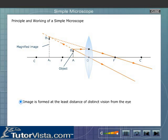Image is formed at the least distance of distinct vision from the eye. That is, the distance from the object is approximately equal to 25 cm.